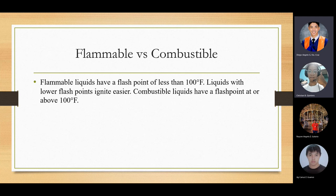Flammable versus combustible: flammable liquids have a flashpoint of less than 100 degrees Fahrenheit. Liquids with lower flashpoint ignite easier. Combustible liquids have a flashpoint at or above 100 degrees Fahrenheit. This shows the limit between flammable and combustible liquids, and that liquids with lower flashpoint ignite more easily.